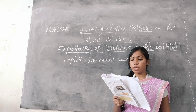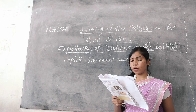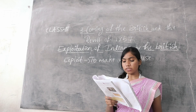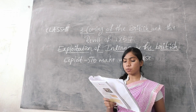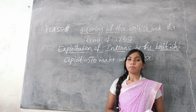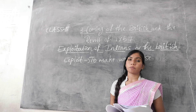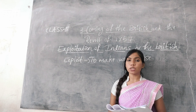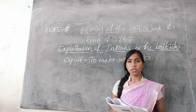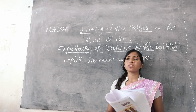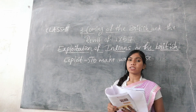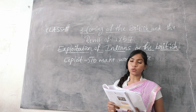Britain had big cotton textile mills which required cotton. So, Britain people bought the cotton from the Indians at a very low price and sent that cotton to Britain.